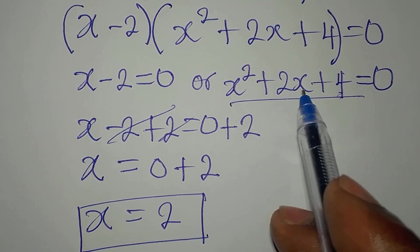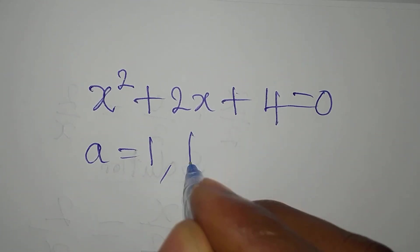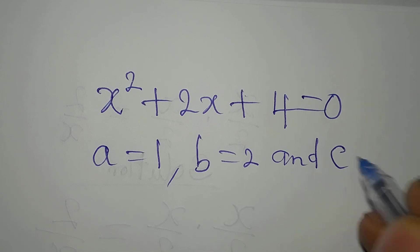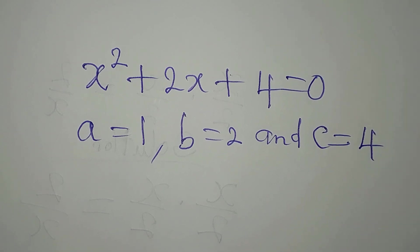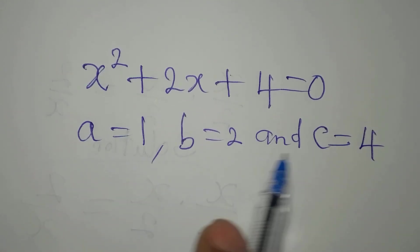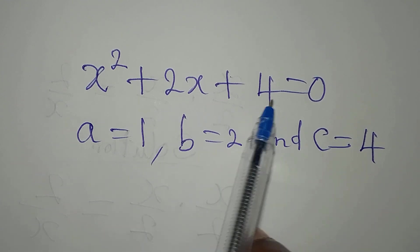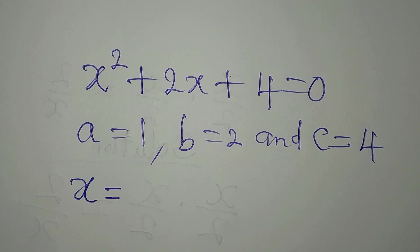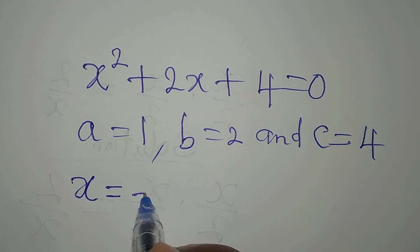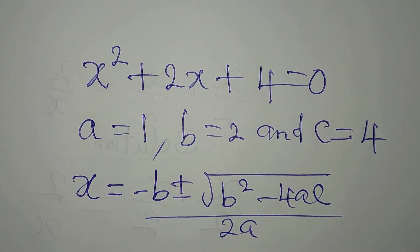Now we solve x squared plus 2x plus 4 equals 0. Here a equals 1, b equals 2, and c equals 4 — representing the coefficient of x squared, the coefficient of x, and the constant respectively. The quadratic formula is x equals minus b plus or minus the square root of b squared minus 4ac, all divided by 2a.